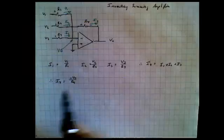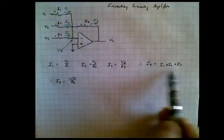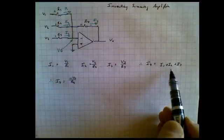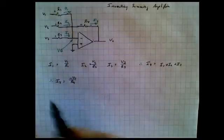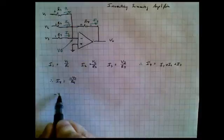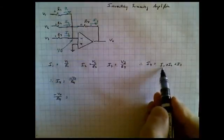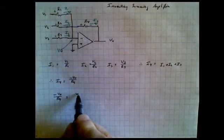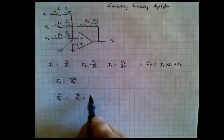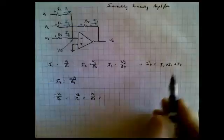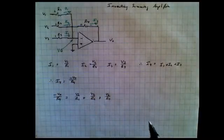So now we can write another equation which says I4 is equal to minus Vout divided by R4. So now what we're going to do is we're going to equate this expression and this expression. And when we write this one, we're going to substitute each one of these individual values here into it. So now we can write that minus V0 over R4, that's I4, is equal to I1, right here, V1 divided by R1, plus I2, right here, V2 divided by R2, plus I3, which is V3 divided by R3.